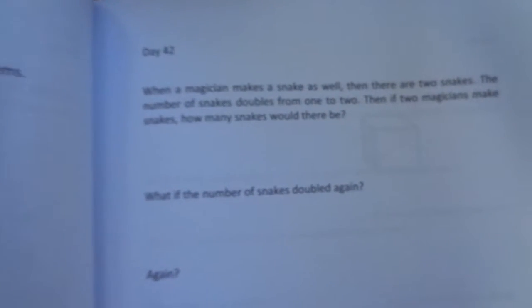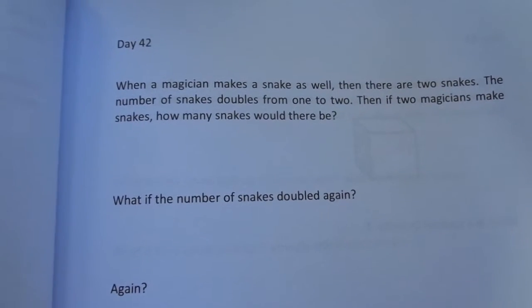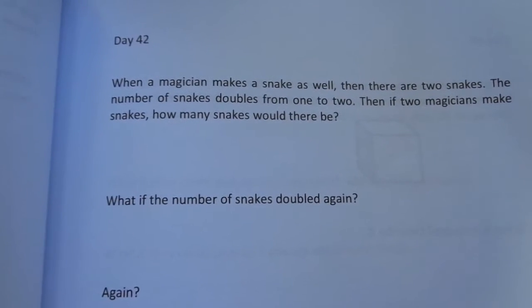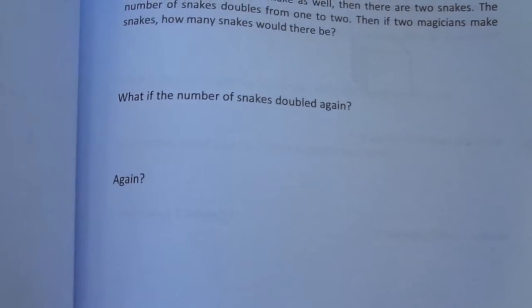And then it's going to give them space to do their problems. So the magicians make a snake after Moses did. So this lesson they double numbers.